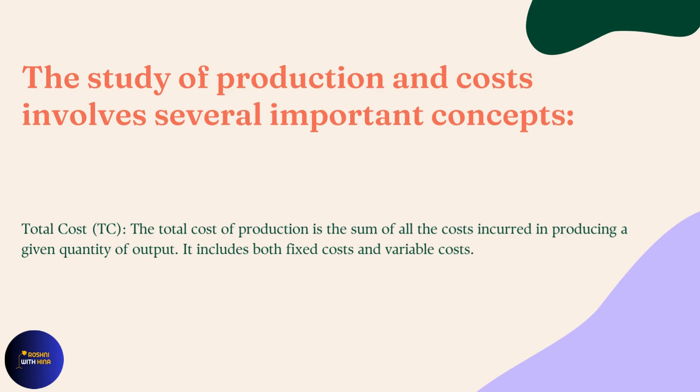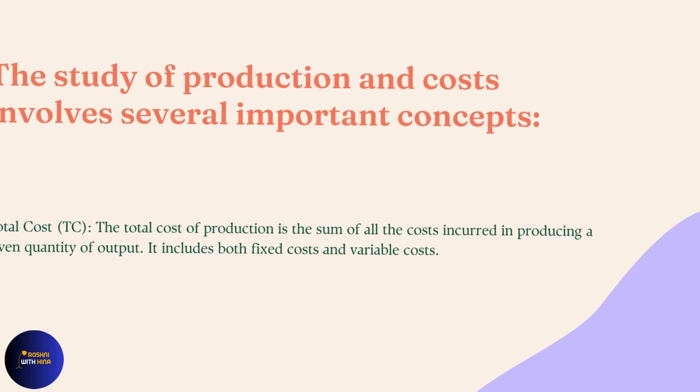Total Cost, abbreviated as TC. The total cost of production is the sum of all the costs incurred in producing a given quantity of output. It includes both Fixed Cost and Variable Cost.